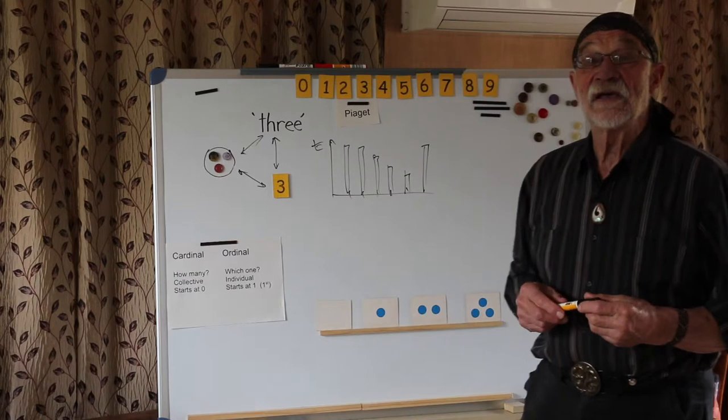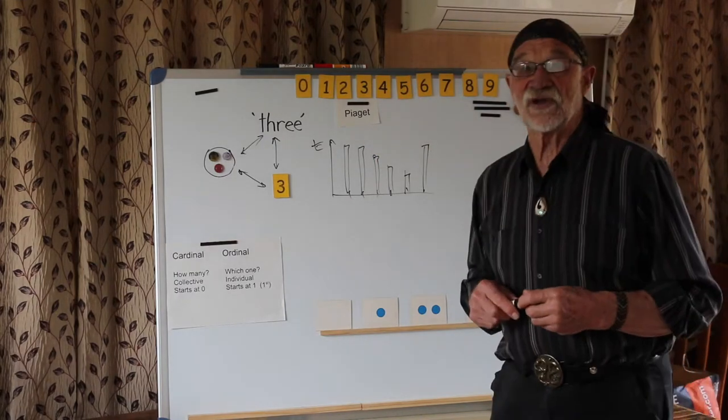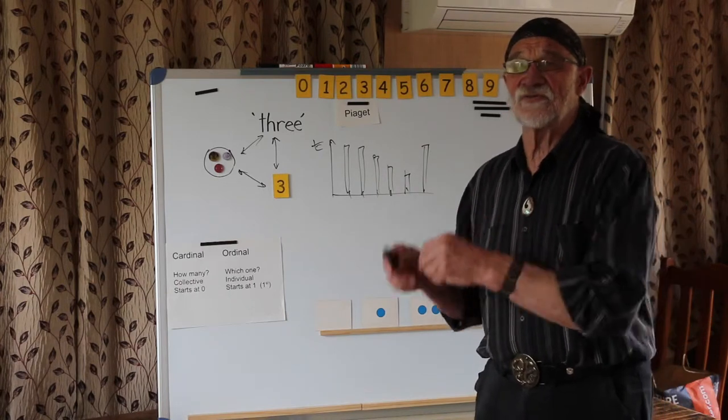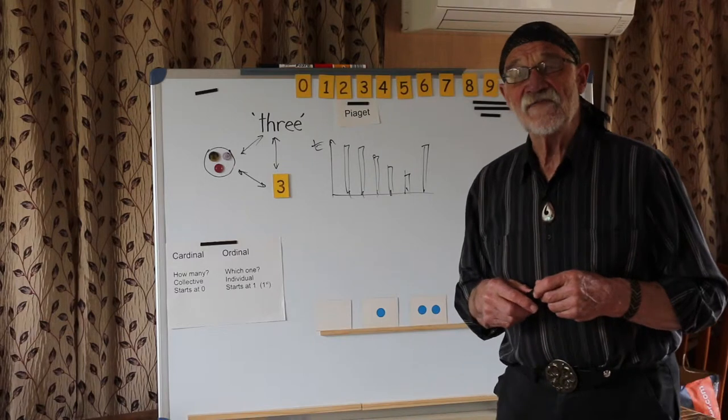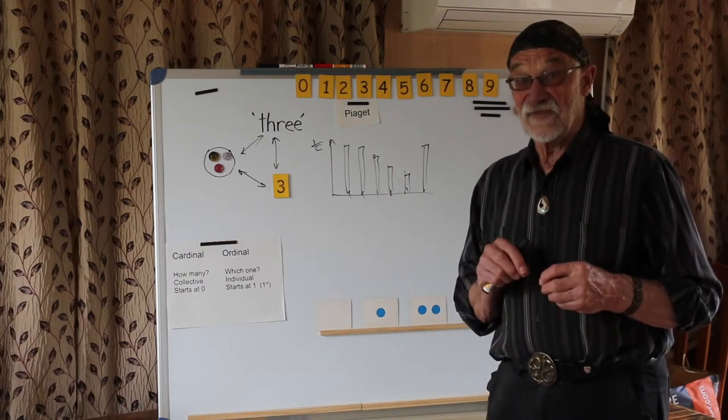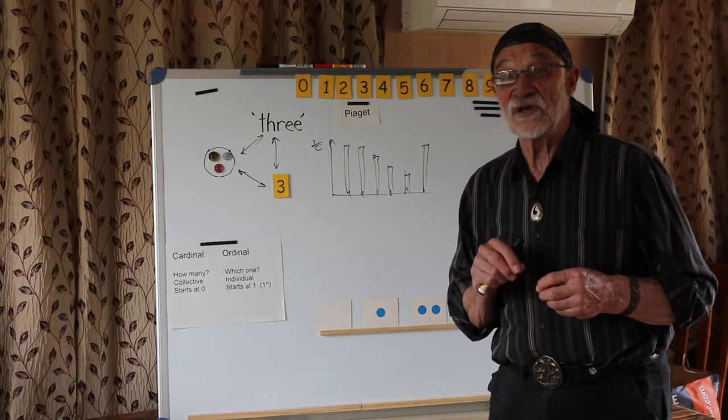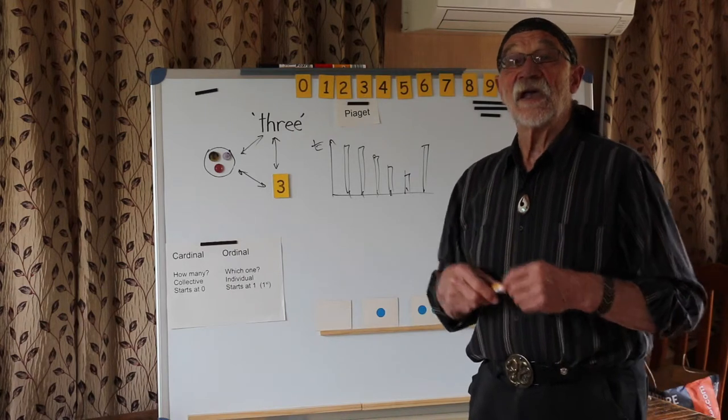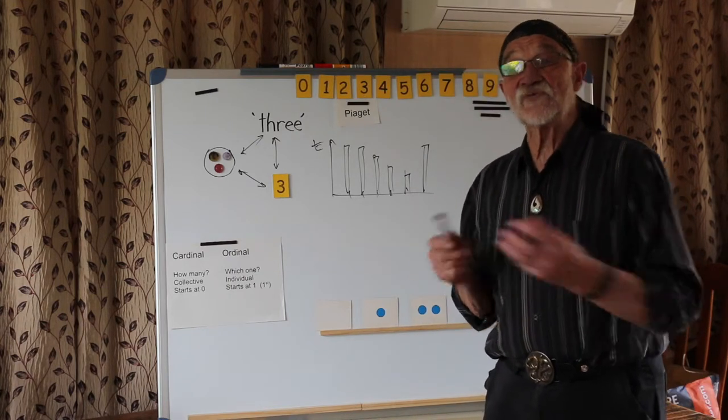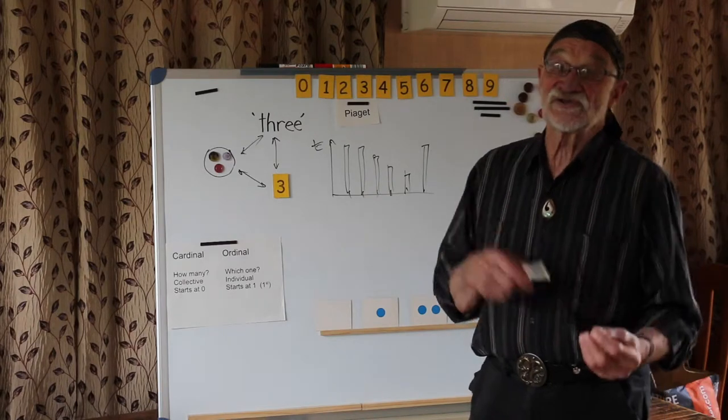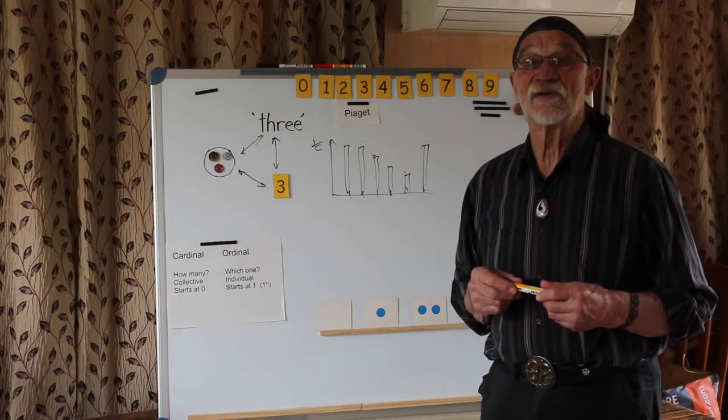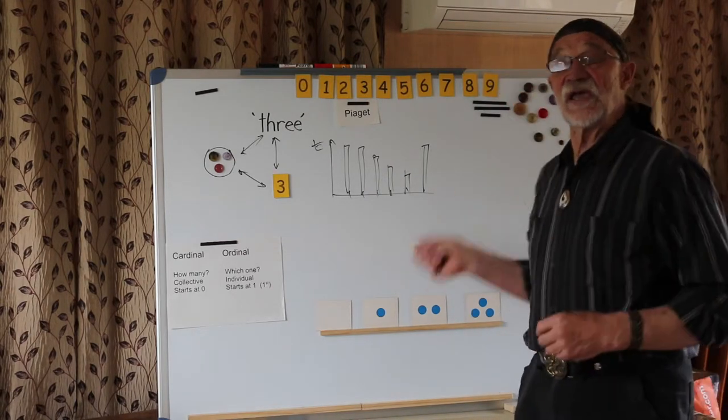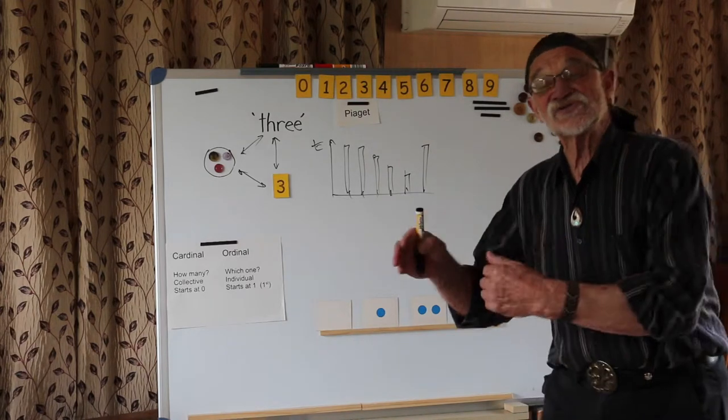There are three well recognized errors that they make. And those errors are, firstly, they haven't got the sequence correct. They're learning to say it and they'll say one, two, four. Secondly, they don't get that coordinating of the chanting and the touching correct. They'll say one, two, three. And finally, they'll mix up which ones they have visited and which ones they haven't, and they'll count something twice or miss something out. Now we can avoid those errors. We don't need to count at the moment. So we can start earlier.